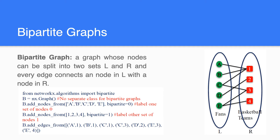Now we are adding some nodes: A, B, C, D, and E, and labeling them as the first node set with bipartite=0. After that we add a few more nodes: 1, 2, 3, and 4, and label them as bipartite=1, which is the second set of the bipartite graph.